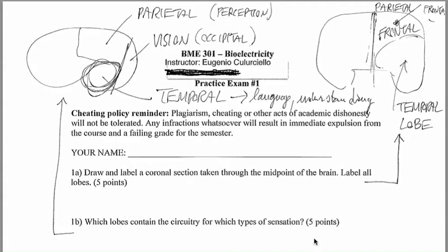Hello everyone. My name is Eugenio Cullorcello and this is Biomedical Engineering 301 Bioelectricity. Today, we will go through the practice exam number one. This is a practice test for the first exam in this course.